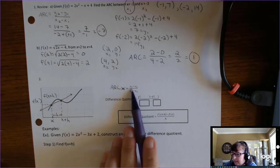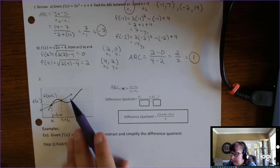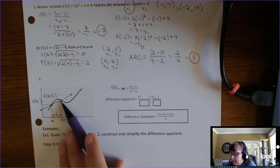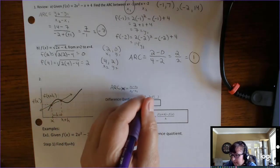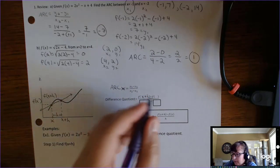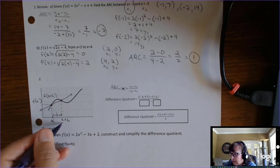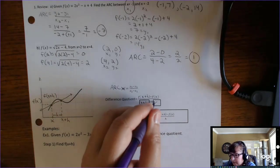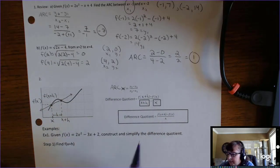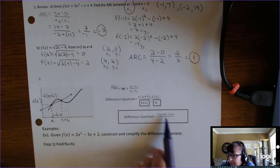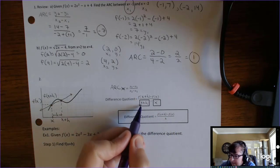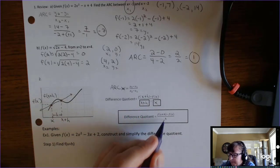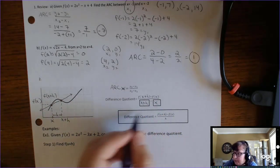To translate the ARC formula using this notation: the second y-coordinate is f of x plus h, minus the first y-coordinate f of x, over x2 which is x plus h, minus x1 which is x. Simplifying, x plus h minus x — the x's cancel — leaving just h. This is the difference quotient, and you have to have it memorized. Remember, h is the distance between the two x-coordinates.